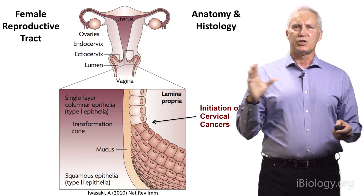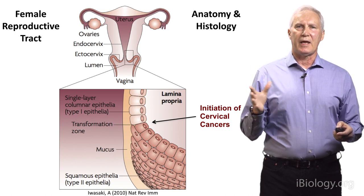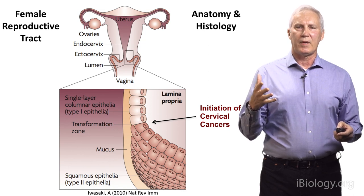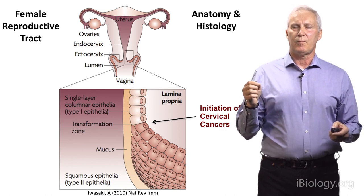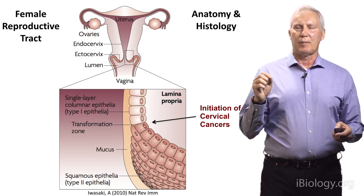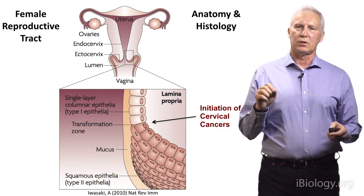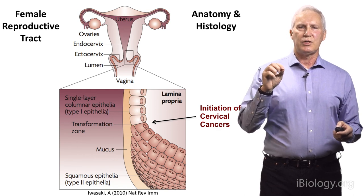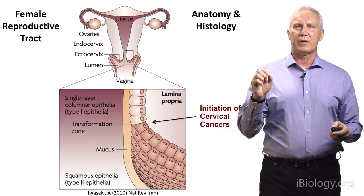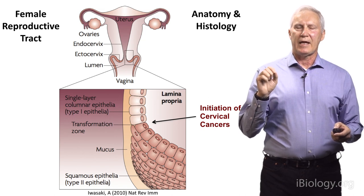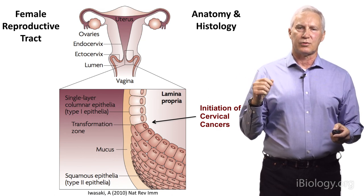Oncogenic HPVs infect many sites in both the male and female genitalia — the vaginal and vulvar regions of women and the penile skin of men. We believe HPV predominates in cervical cancer because there's a place in the anatomical regions of the cervix called the transformation zone that's particularly susceptible to carcinogenic progression. This is the region where single columnar epithelia meets stratified squamous epithelia. We really don't understand why this particular site is so prone to HPV-induced carcinogenesis, but this is also the site where most anal cancers arise.